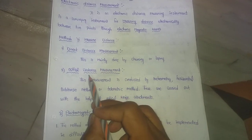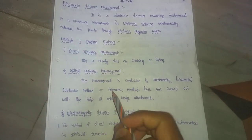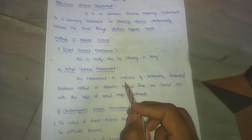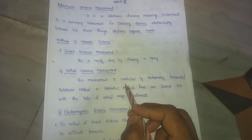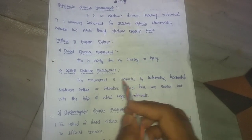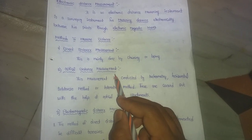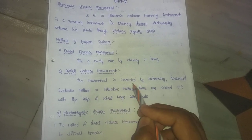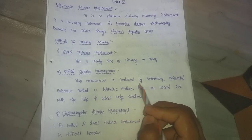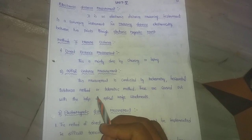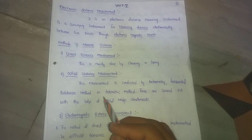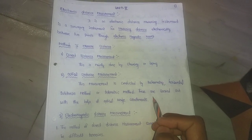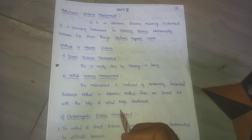The second method is optical distance measurement. This is used to measure the distance between two points. This measurement is conducted by tachymetry, horizontal stadia method, or telemetric method. These are carried out with the help of optical wedge attachments.